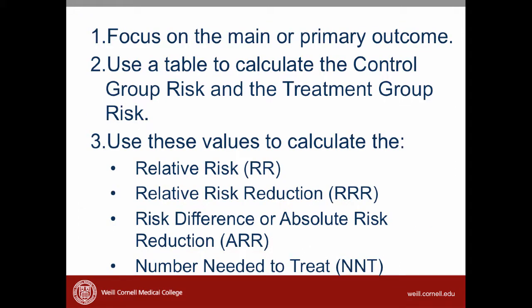As you start to read articles comparing different therapies, I'd like you to do the following: first, focus on the main or primary outcome; second, use a table to calculate the control group and treatment group risks; and third, use these values to calculate the relative risk, the relative risk reduction, the risk difference or absolute risk reduction, and the number needed to treat. We will practice calculating all of these items in class. We will also touch on the issue of statistical testing to determine whether the treatment effect was statistically significantly different from the control effect, and we will spend some time discussing how this affects patients.